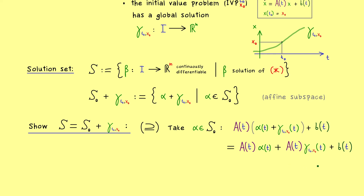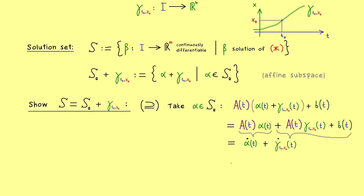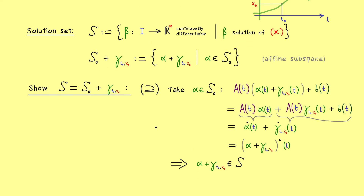We recognize that α solves the homogeneous system, so the first part can be written as α-dot. For the second part we use that γ solves our star system, so we find γ-dot(t). One part goes to α-dot and the two remaining parts go to γ-dot. We can write this with a single dot — it's the derivative of the two functions added. So in the end, α + γ solves our system star, and thus the function α + γ also lies in our set S. This shows the first inclusion.